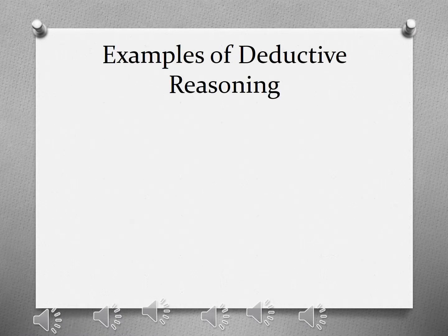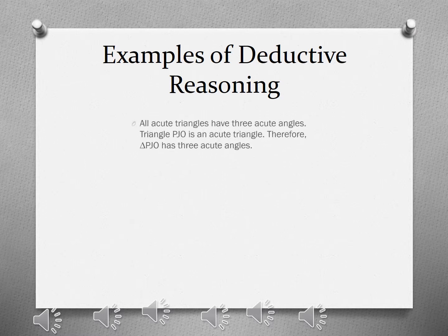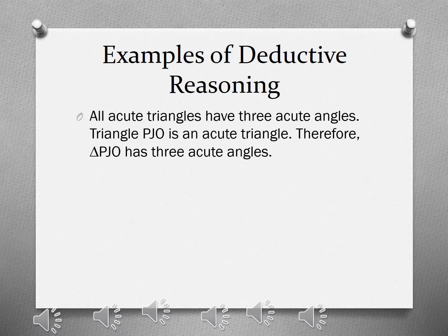For example, all acute triangles have 3 acute angles. Triangle PGO is an acute triangle. Therefore, triangle PGO has 3 acute angles. This argument uses deductive reasoning since the conclusion is based on a definition which is accepted as true.